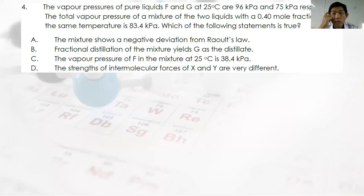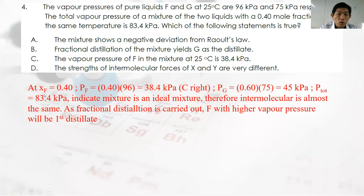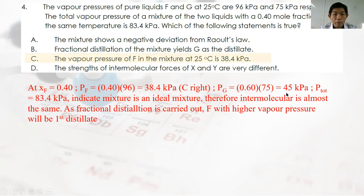Question 4: Vapor pressures of pure liquids F and G at 25°C are 96 and 75 kPa respectively. Total vapor pressure of a mixture with 0.4 mol F is 83.4 kPa. Partial pressure of F = 0.4 × 96 = 38.4 kPa. Partial pressure of G = 0.6 × 75 = 45 kPa. Total = 83.4 kPa, confirming this is an ideal mixture. Since F has a higher vapor pressure, F will be the first distillate in fractional distillation. Best answer: C.